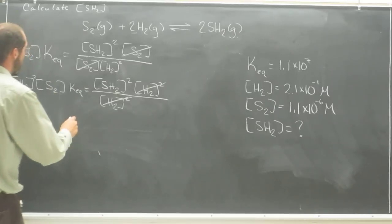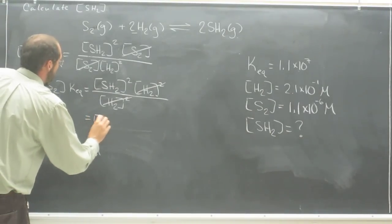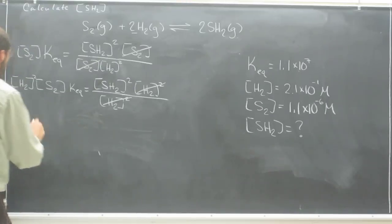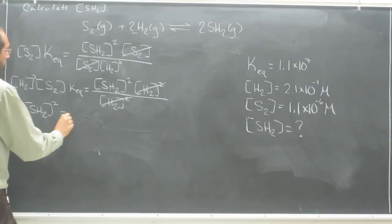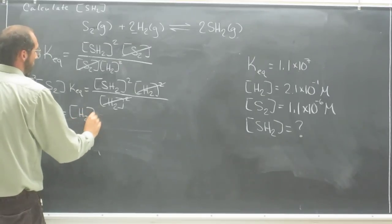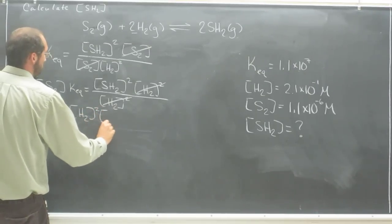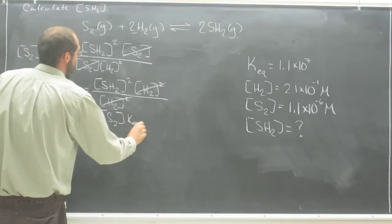So now, let's just turn this around so it will be easier. So, SH2 squared now equals the concentration of H2 squared times the concentration of S2 times the Keq.